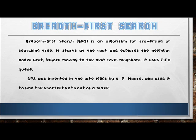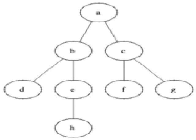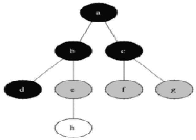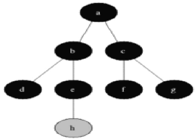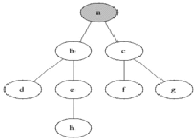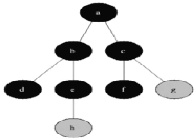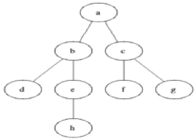To start with BFS, we begin at level 0, visiting all nodes from left to right on that level. Then we go to level 1, again from left to right, visiting all nodes within that level. This continues until we reach the lowest level of the tree and have visited every node.